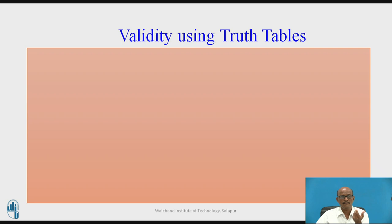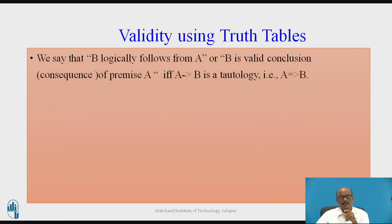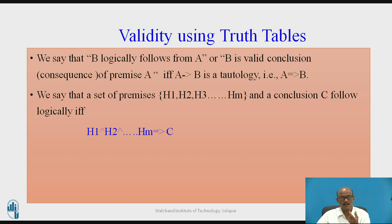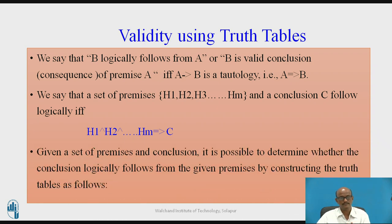Validity using truth table: We say that B logically follows from A, or B is a valid conclusion or consequence of premise A, if and only if A conditional B is a tautology — then A tautologically implies B. A premise C follows logically if and only if H1 ∧ H2 ∧ ... ∧ HM → C is a tautology, meaning C logically follows from H1 through HM. Given a set of premises and a conclusion, we can determine whether the conclusion logically follows by constructing truth tables.